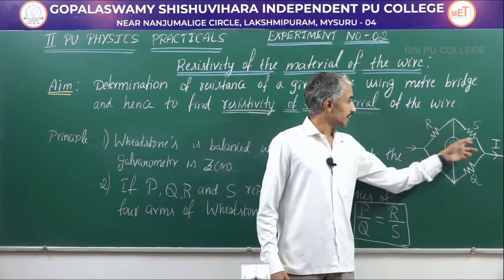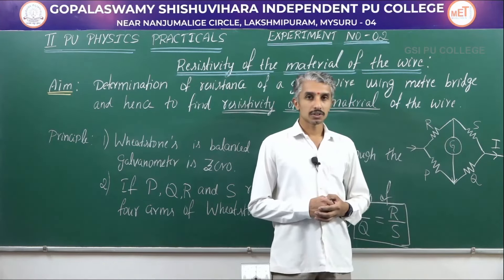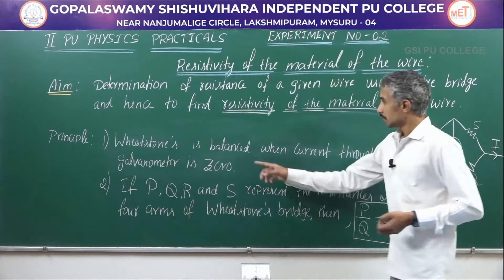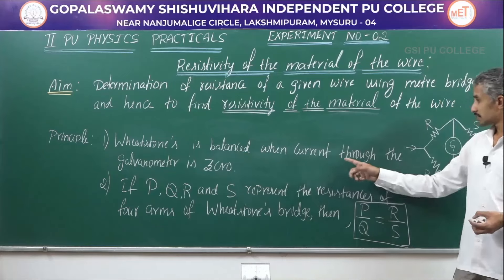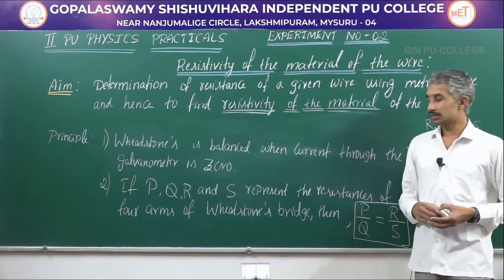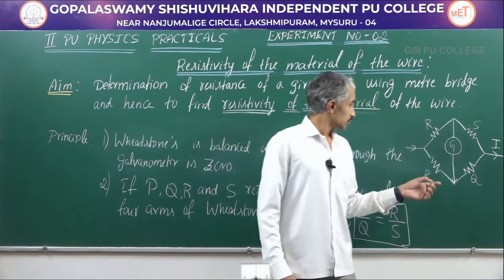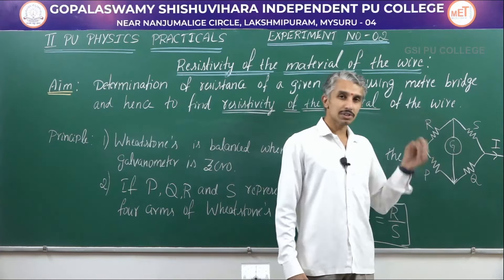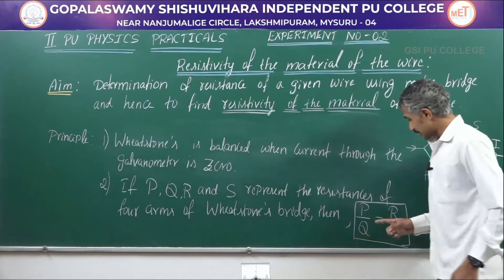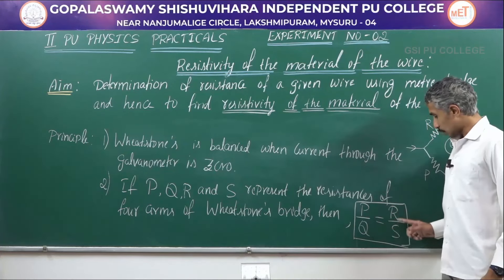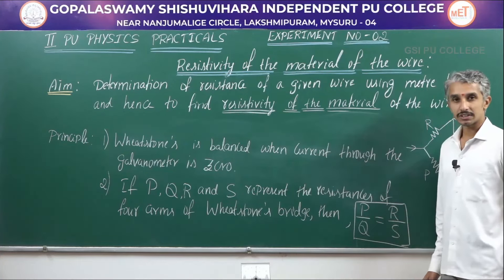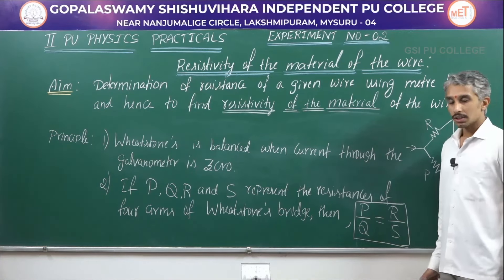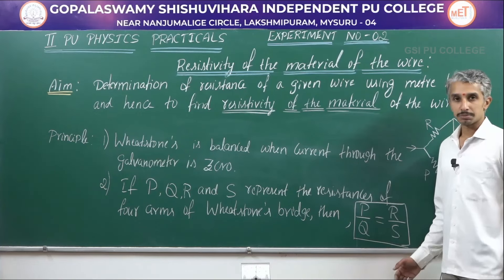Let us recall the principle of the Wheatstone bridge. If P, Q, R, and S are the four resistors in the different arms of the Wheatstone bridge, then the bridge is balanced when the current through the galvanometer is zero. This happens when the condition P by Q equals R by S is satisfied. We will understand this better when we perform the experiment.